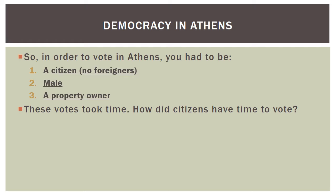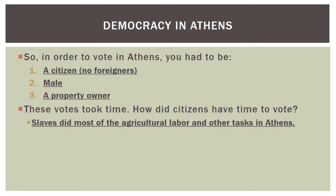These votes took time — there was debate and research and education involved. Citizens only had time to vote because they relied heavily on slave labor. Slaves were the ones doing the farming and other tasks in Athens so that regular life could still go on, and the wealthy land-owning male nobles had time to go through this voting process.